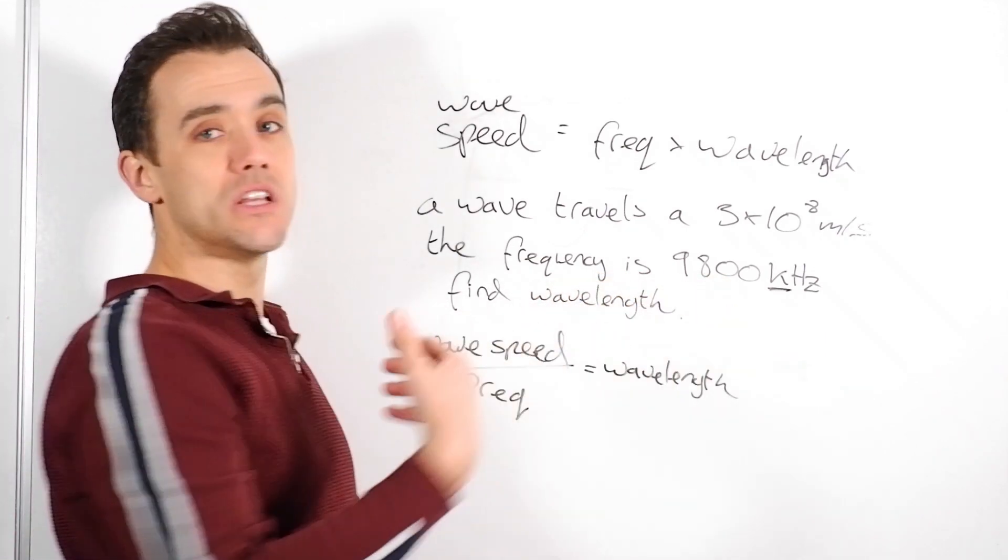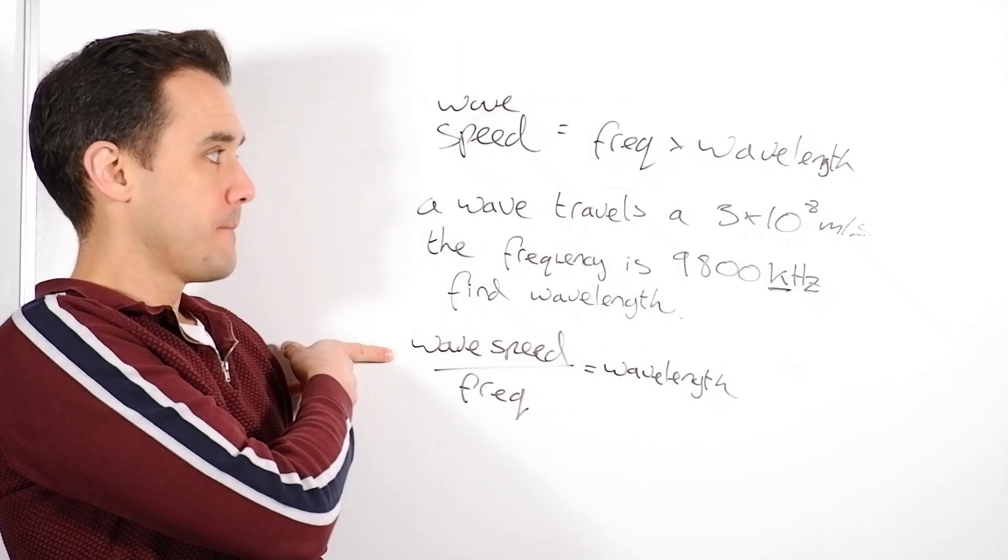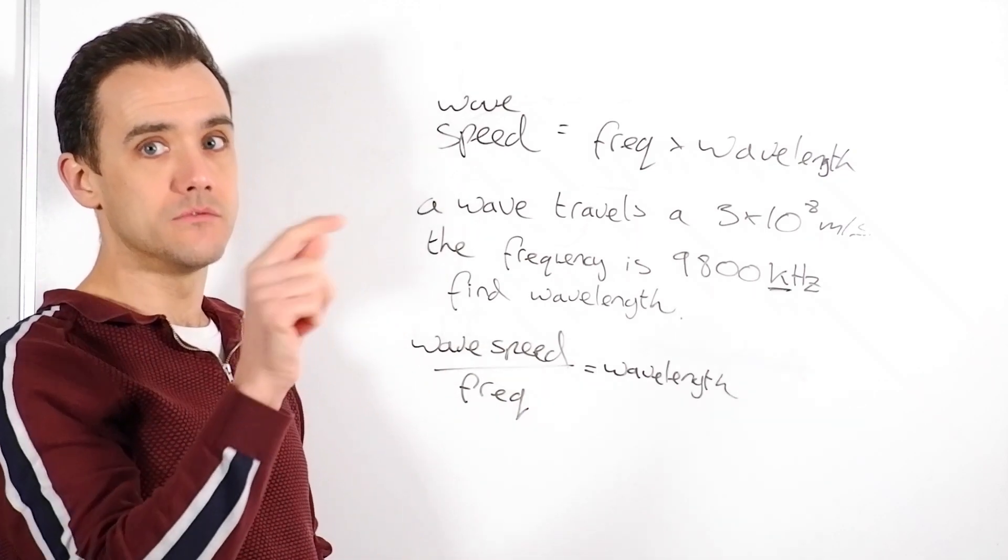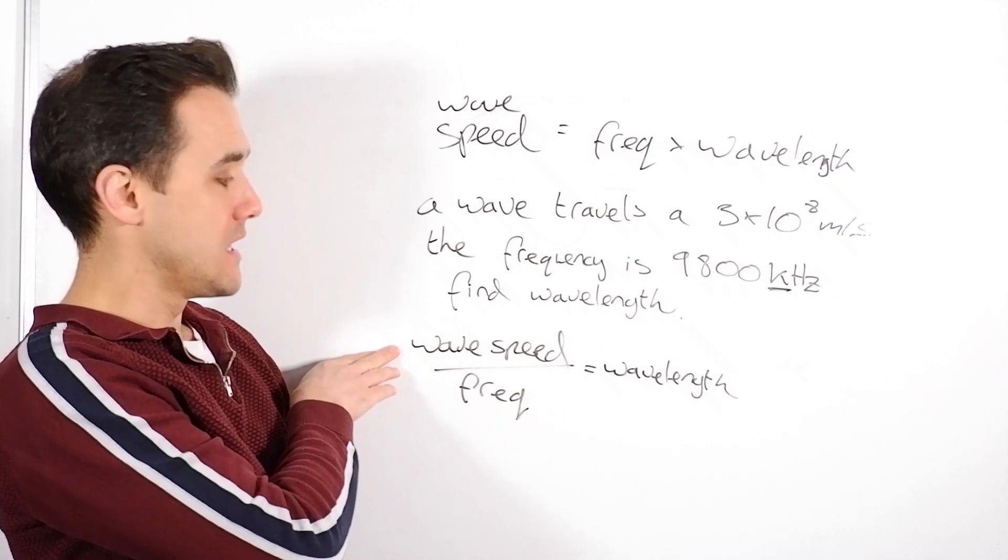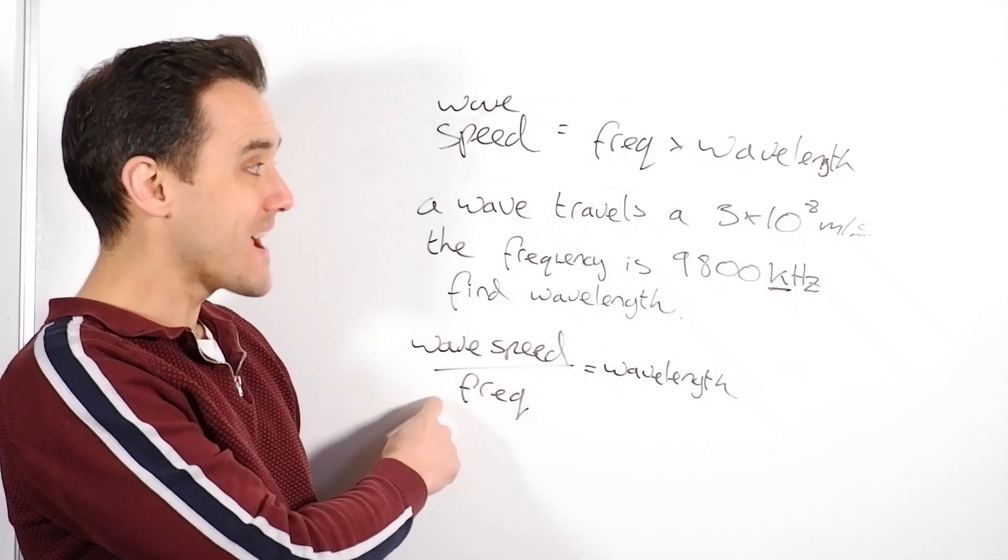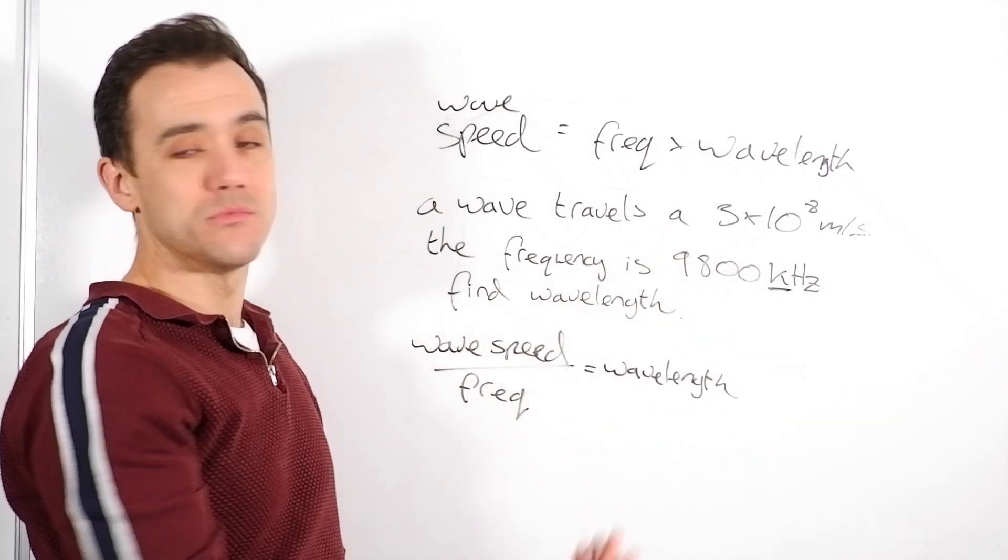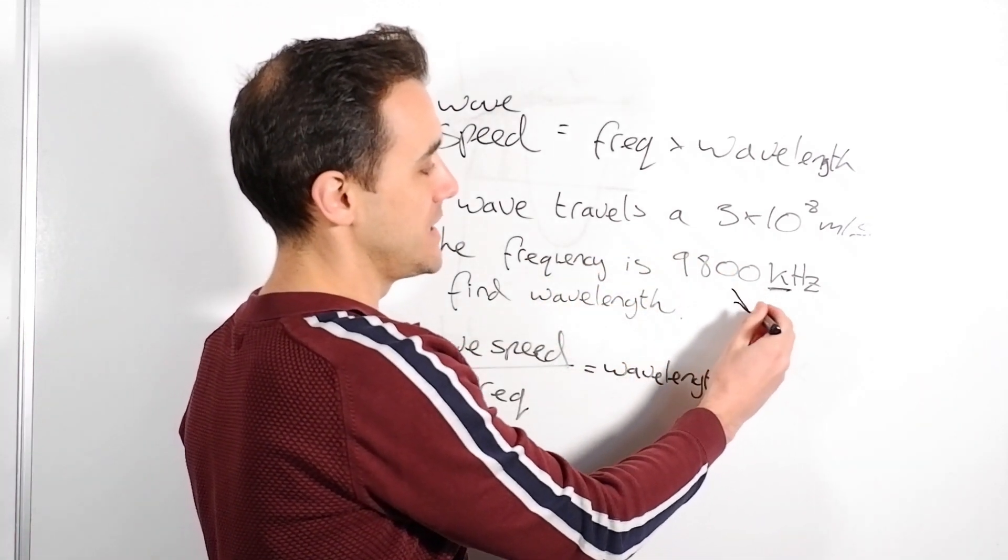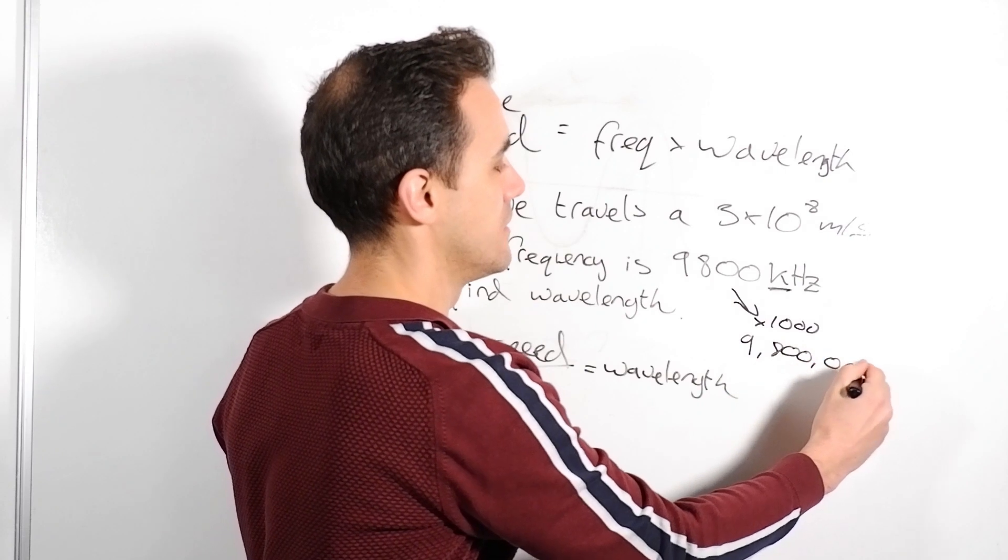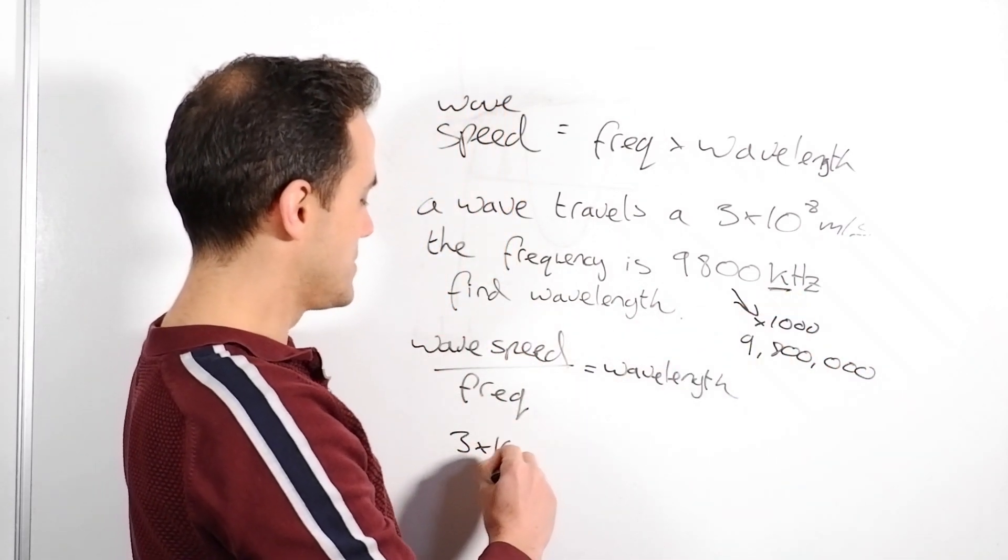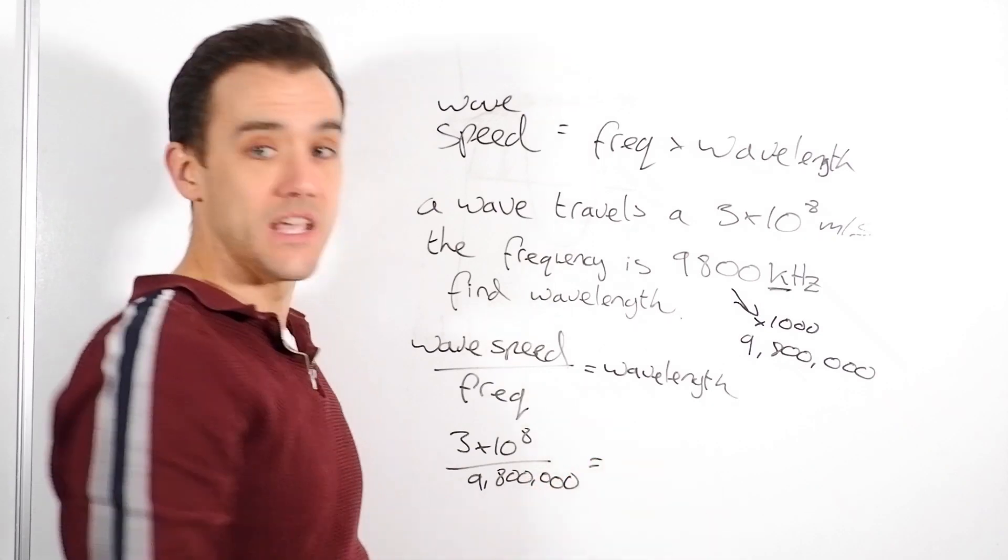But you need to do 9,800 times a thousand when you put it into your calculator. So, you can either do your 3 times 10 to the 8. Use your standard form button. Don't do times 10 to the power of 8. Use your standard form button because you can easily make mistakes when you don't use that standard form button. So, 3 times 10 to the 8 divided by, you could just do brackets, 9,800 times a thousand close brackets. That will give you your wave speed. Or, you could do your 9,800 times a thousand first to give you, so basically we need to times this by a thousand. So, we could do that first and find it's 9,800,000. And then we could do our wave speed as 3 times 10 to the 8 divided by our 9,800,000 to get our answer.